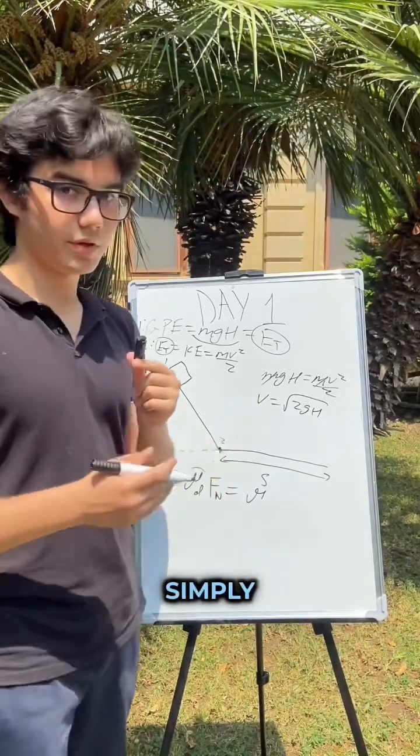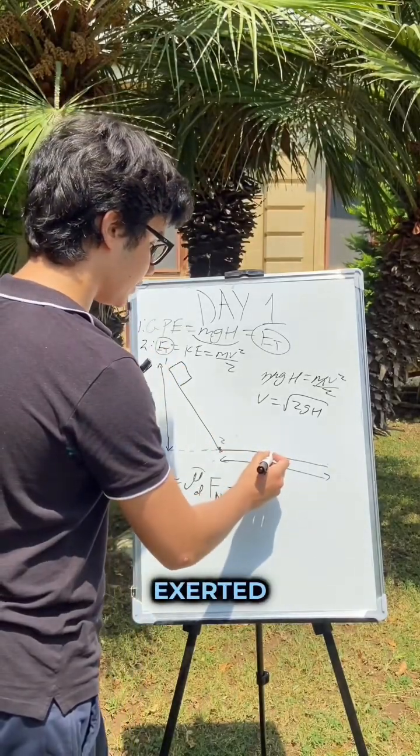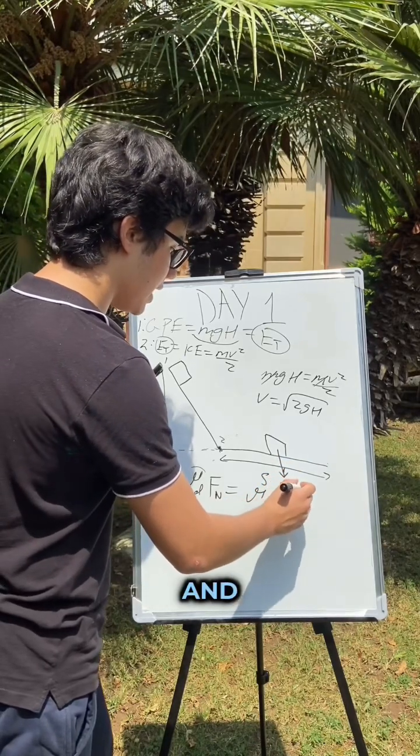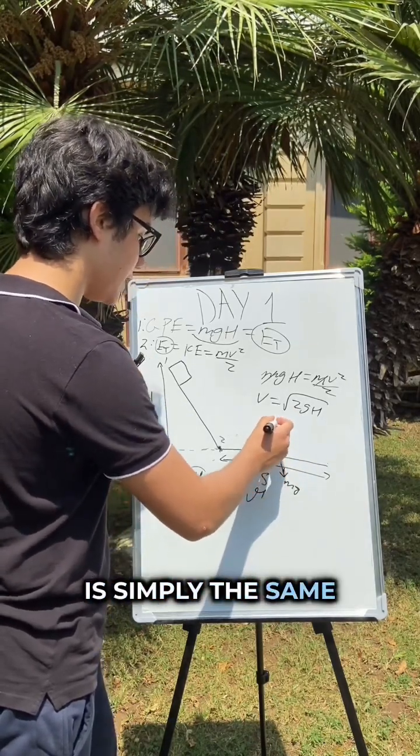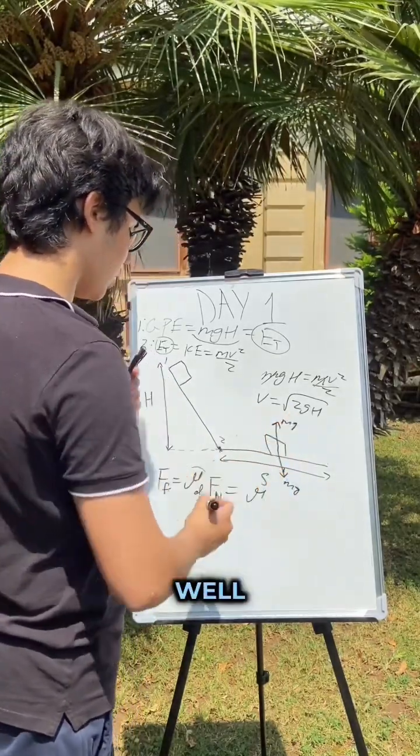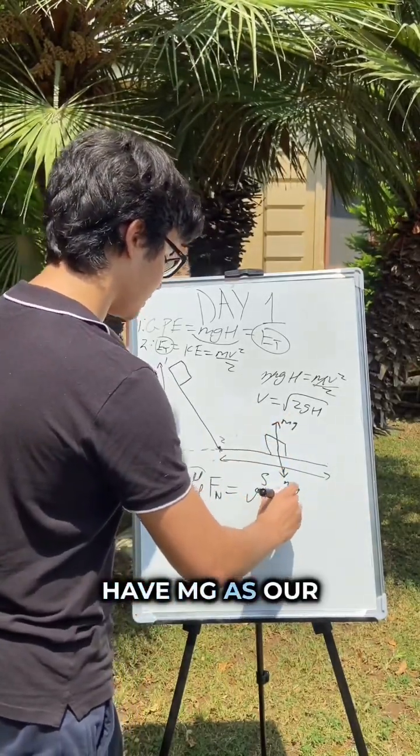Our reaction force is simply the force being exerted on our block. For instance, when our block is right over here, the block has its own weight which is mg, and the reaction force is simply the same force reacting in the opposite direction, so that will be mg as well. And so we have mg as our reaction force.